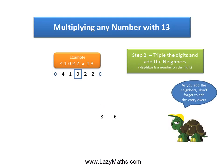The next pair is 0 and 2. Triple of 0 is 0, plus the neighbor 2 gives us 2.